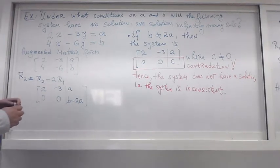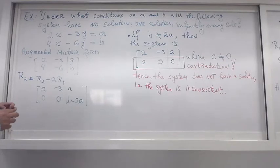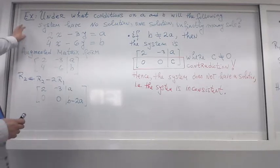A question that was asked is about the situation where we have some parameters a and b, and depending on their value or their relation, the system might have no solution, one solution, or infinitely many. So the question goes: under what conditions on a and b, which are parameters, will the following system have no solution, exactly one solution, or infinitely many solutions?